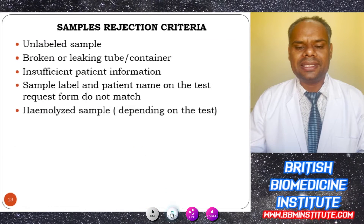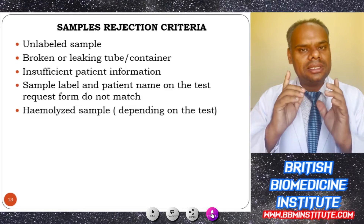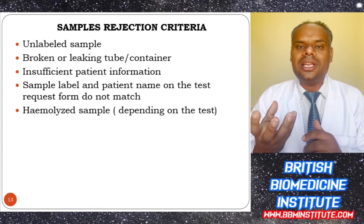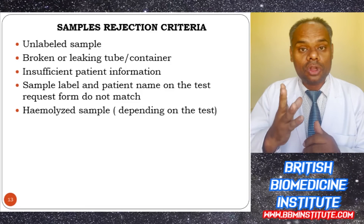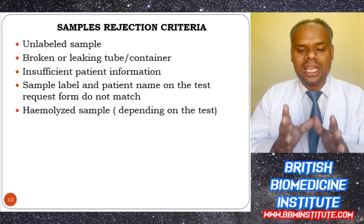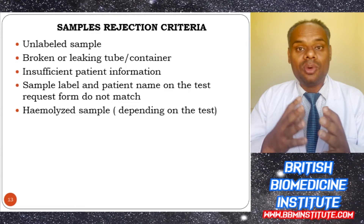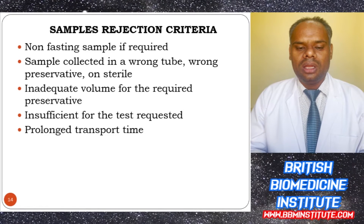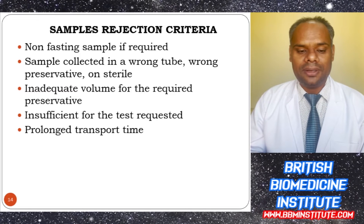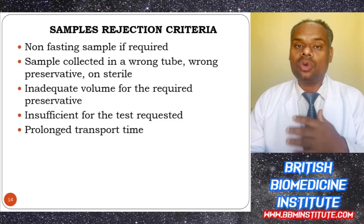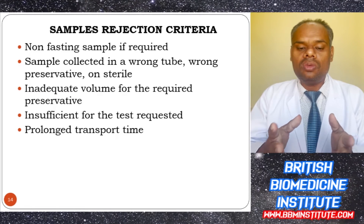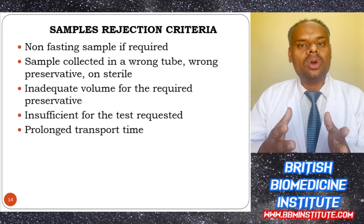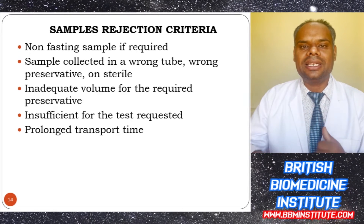Sample rejection criteria can be due to: an unlabeled sample; a broken or leaky tube or container; insufficient patient information; a mismatch between the sample label and the test requisition patient name; a hemolyzed sample depending on the test; no fasting sample when required; sample collected in wrong tubes or with wrong preservation; inadequate volume of required preservatives; insufficient volume for the test requested; or prolonged transport time.